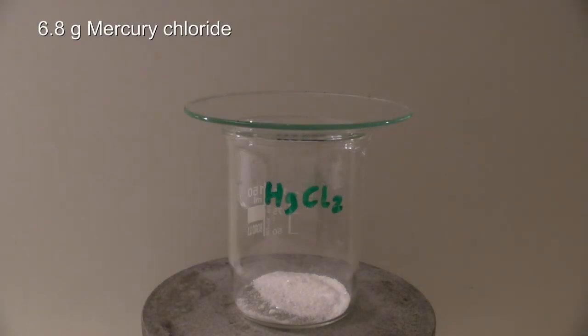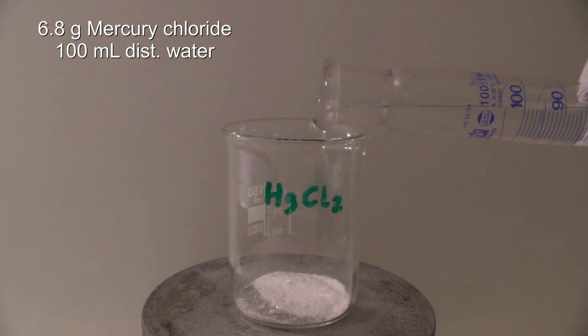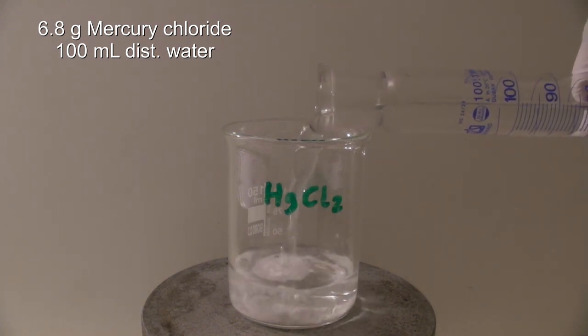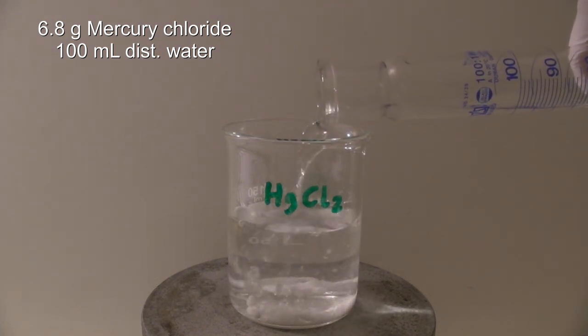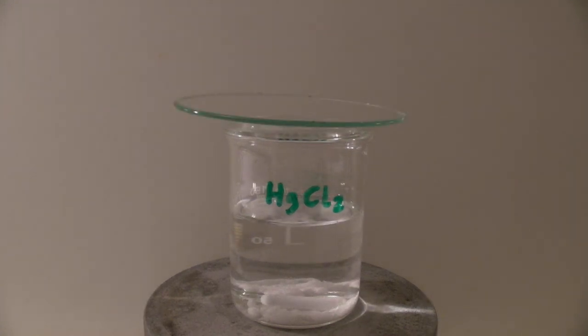First, 6.8 grams of mercury chloride are weighed out in a 150 ml beaker and 100 ml of distilled water were added. Then it was stirred until most of it had dissolved.